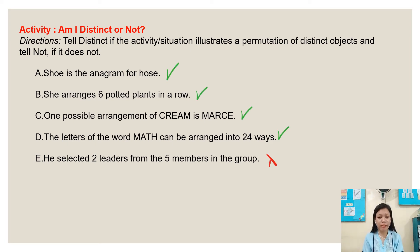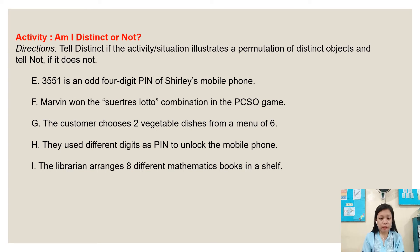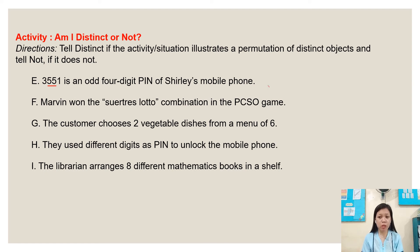Number five: he selected two leaders from five members in the group. The answer is not distinct objects because we don't know the specific roles of the leaders. Number six: 3551 is an odd four-digit PIN of Shirley's mobile phone. The answer is not a permutation of distinct objects because 3551 has two 5s.